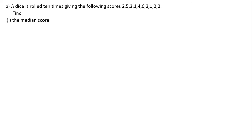Part B is saying: a die is rolled 10 times, giving the following scores — find the median score. The scores are 2, 5, 3, 1, 4, 6, 2, 1, 2, and 2. When they say the median, they want us to find the middle score.